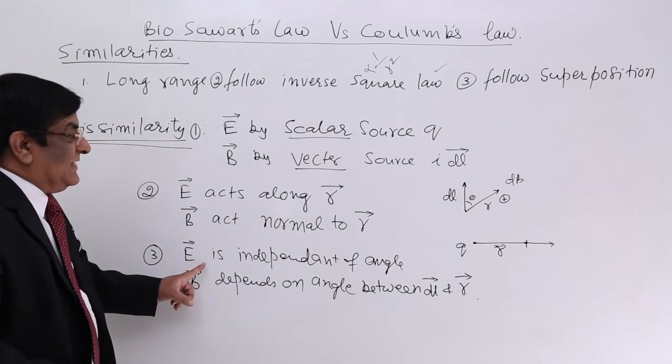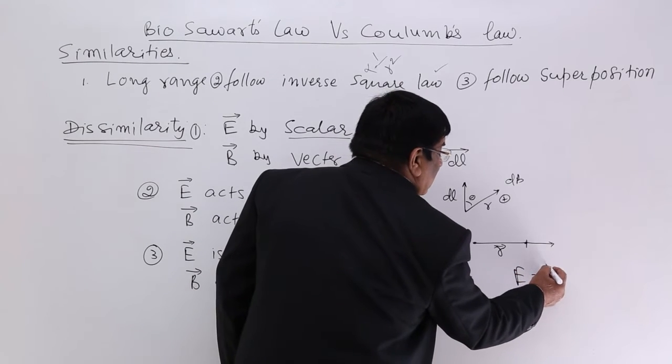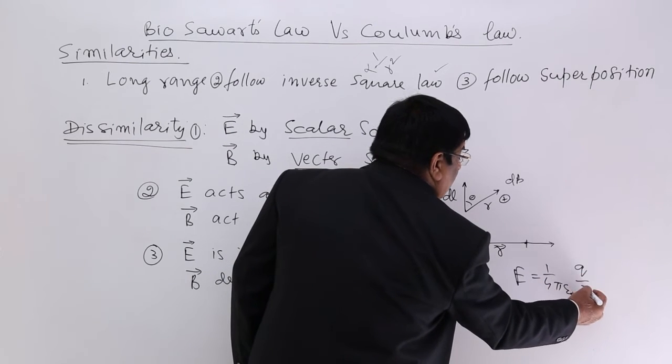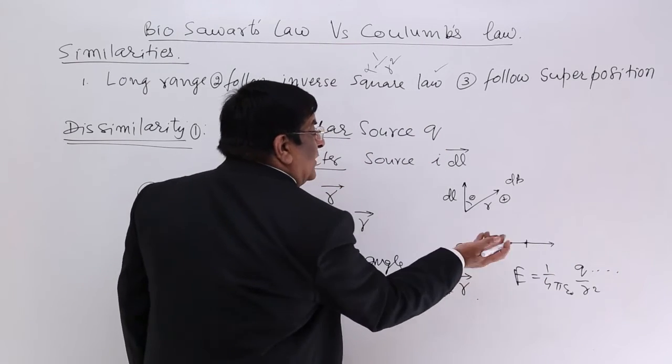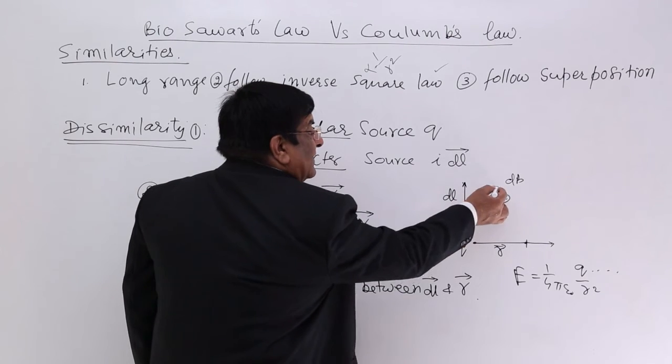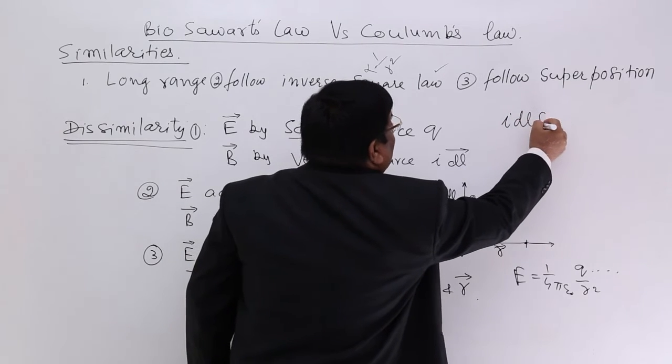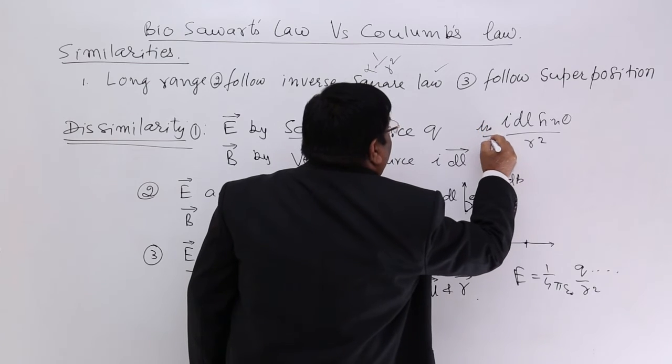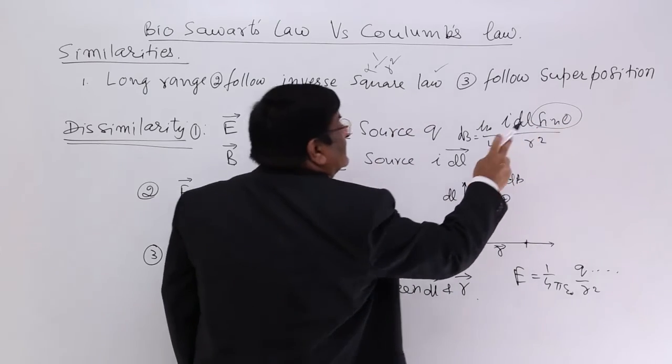Then third difference is E is independent of the angle. There is no sin theta. 1 upon 4 pi epsilon 0, Q upon R square. No theta mentioned here. And theta cannot be there because Q is a point charge. Here DL is not a point. It has got a particular length, and this R and this theta—theta is effective. IDL sin theta upon R square. Now here theta has effect.